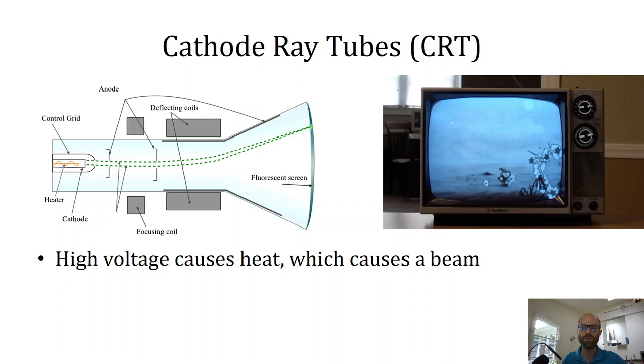But in general, the idea is that high voltage causes heat, which causes a beam to be shot out, and the beam can be directed to draw a picture. And that picture only happens because when the beam hits the fluorescent screen, the screen glows. And you can actually get colors to show up by putting different compounds on the screen and directing the beam to hit certain particles.